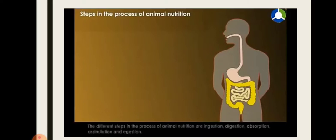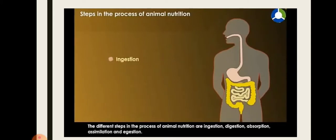This video is about all the steps of animal nutrition. You can see at the bottom it is written: ingestion, digestion, absorption, assimilation, and egestion.